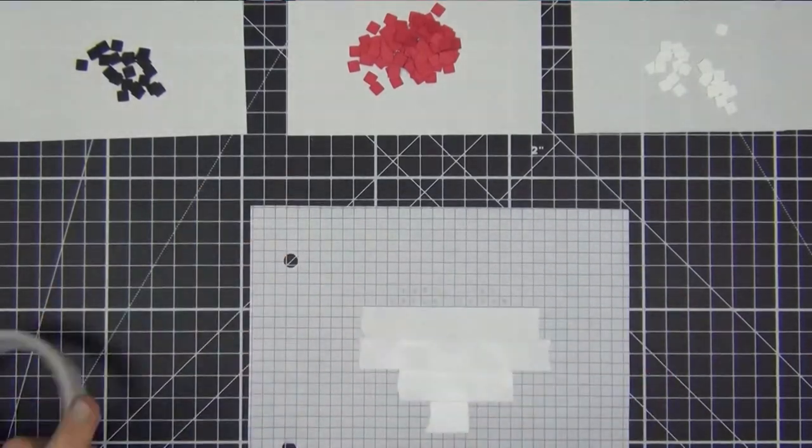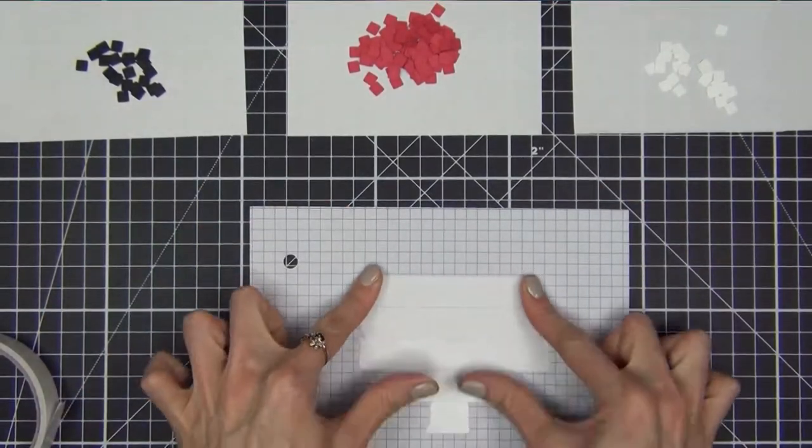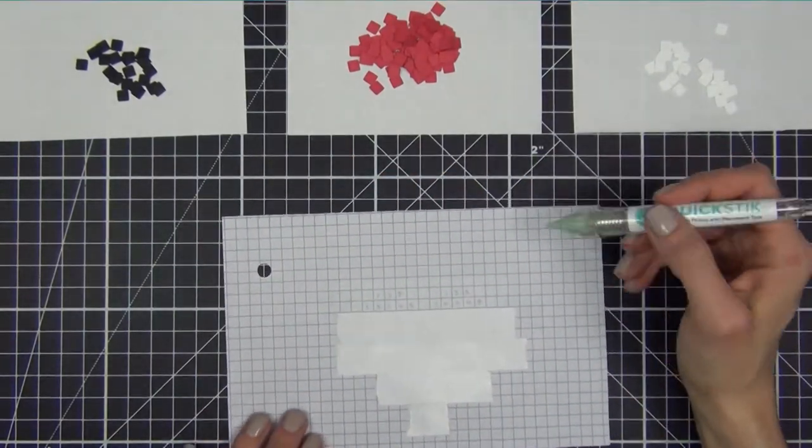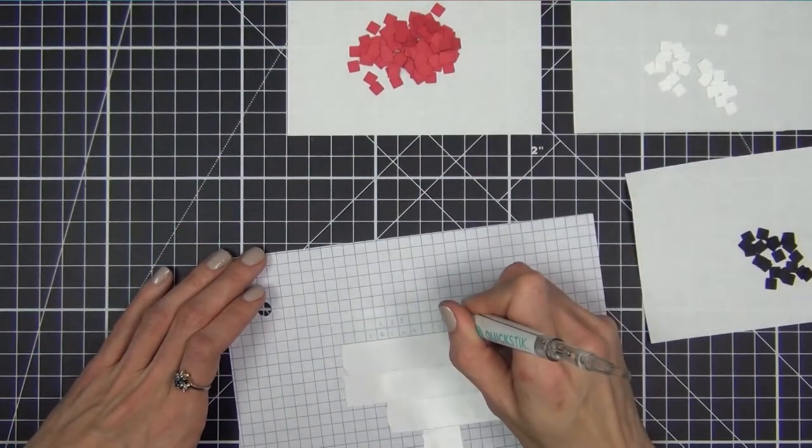Once I have the squares marked, I cover the section up with some double sided tape. You could use a tape runner or liquid adhesive, but this was the quickest and strongest method that I found.